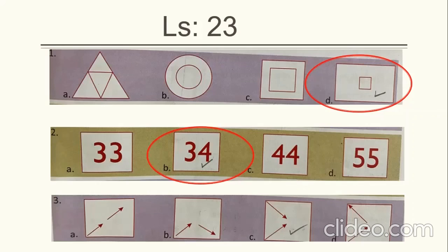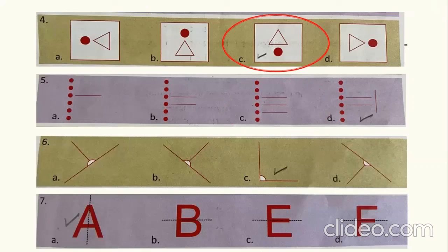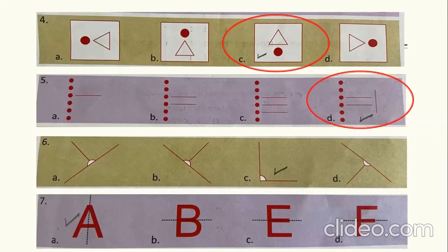In the third figures, the odd one out is figure C because the direction of the arrows is different. In question four, figure C is the odd one out. In question five, figure D is the odd one out — the other pictures have symmetry but figure D does not. In question six, figure C is the odd one out, and in question seven, the odd one out is option A.